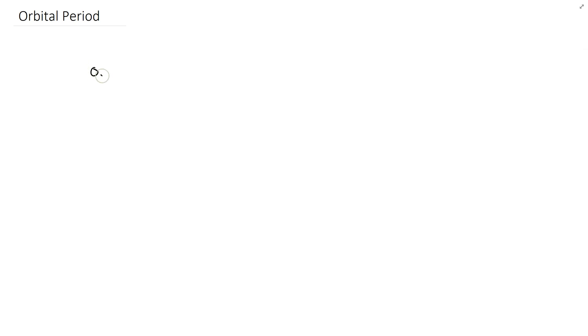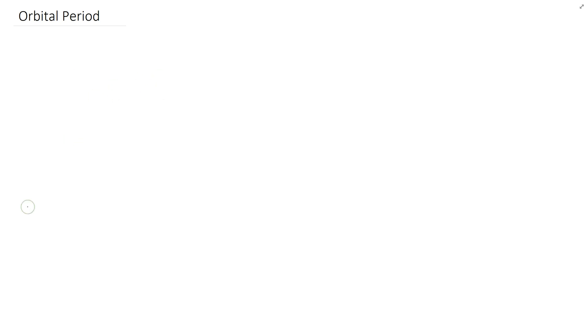Now let's talk about orbital period. Orbital period is simply the amount of time it takes for one orbit. Think about the Earth — the orbital period for the Earth going around the Sun is 365 days. We normally use T for period, and T is the amount of time for one complete orbit.